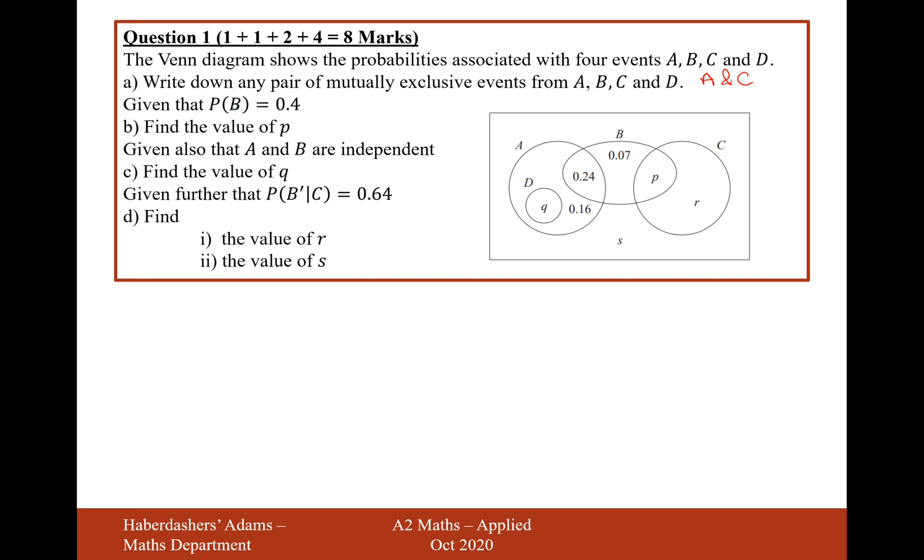Given that probability of B is 0.4, calculate the value of P. Well, P here is going to be added together with 0.24 and 0.07 to make 0.4 in total.